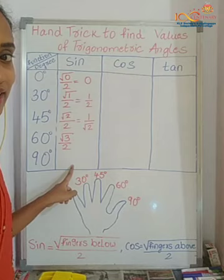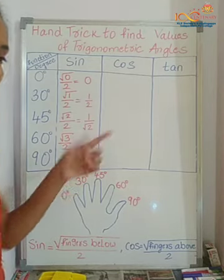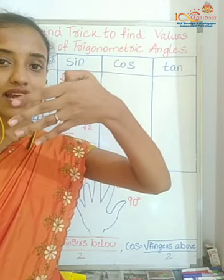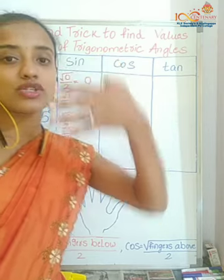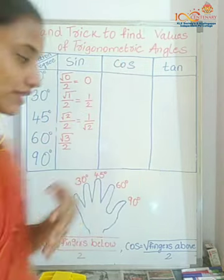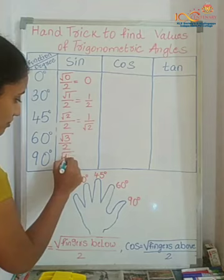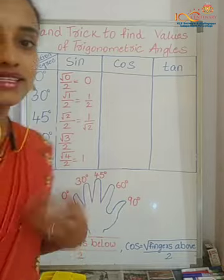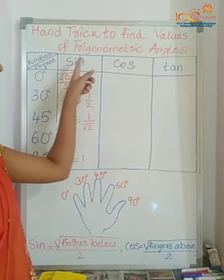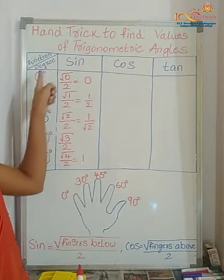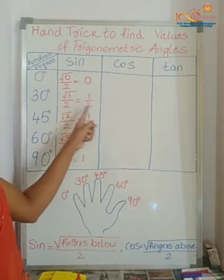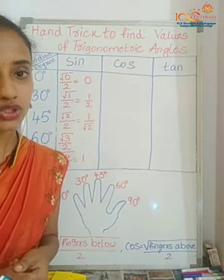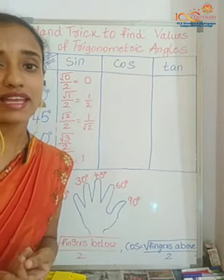The last sine value is sine 90 degrees. The thumb finger indicates 90 degrees. If I fold that, how many fingers do I have below? Four fingers. So it is root four divided by two. Root four is two, and two divided by two equals one. So sine 90 equals one. To summarize: sine 0 is zero, sine 30 is one-half, sine 45 is one by root two, sine 60 is root three by two, and sine 90 is one.